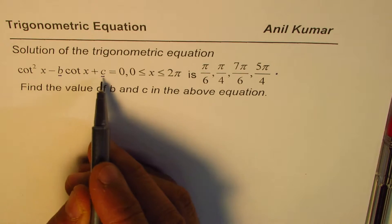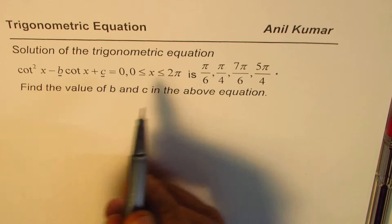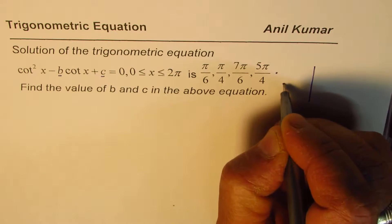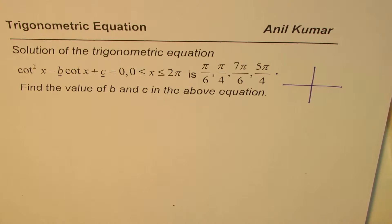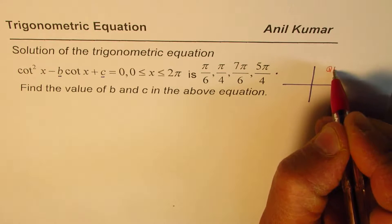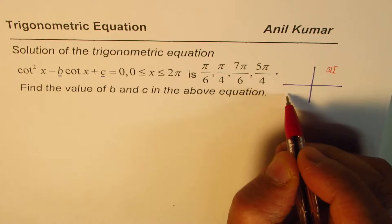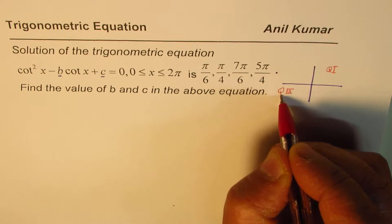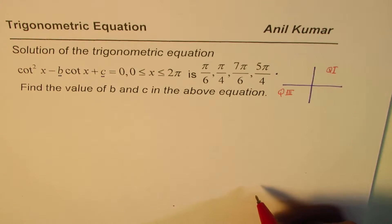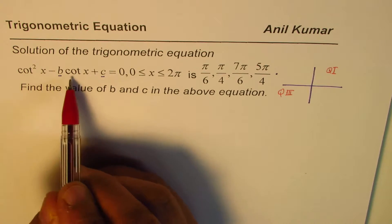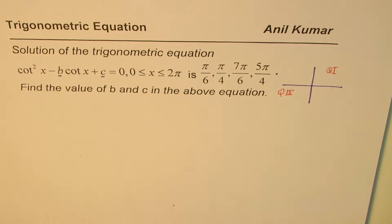This is a quadratic equation in cot, and we are given solutions. If you look at the solutions, you'll find that π/4 and π/6 are in quadrant 1, and 7π/6 and 5π/4 are in quadrant 3. So these solutions are in quadrants 1 and 3, meaning we are looking for a positive value of cot — cot is positive in these quadrants.